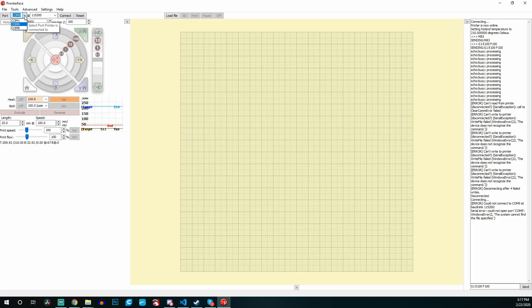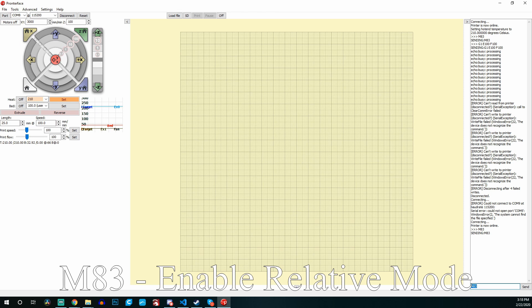Now jumping over to PronterFace, we're going to connect to our 3D printer. Make sure the hot end is still at temperature. I hit 210 again just to be certain it's not cooling down. Then we're going to send over an M83 command in the bottom right. Just type it in and hit enter or send to send it over.